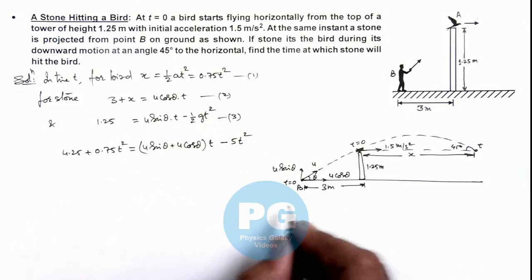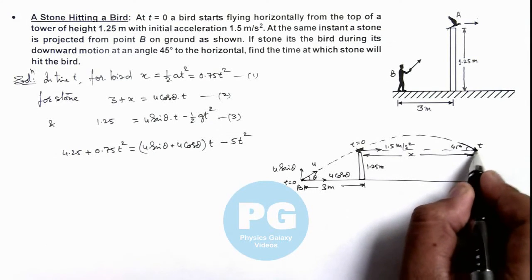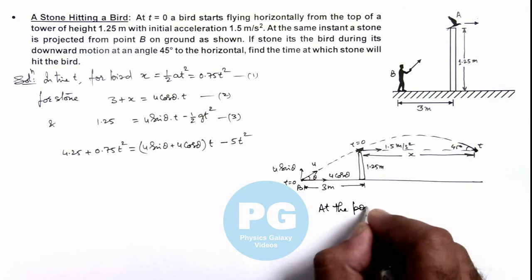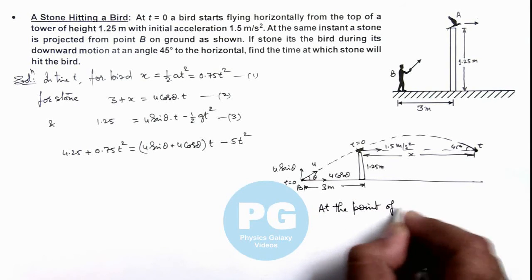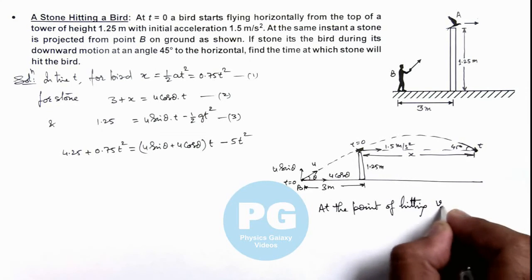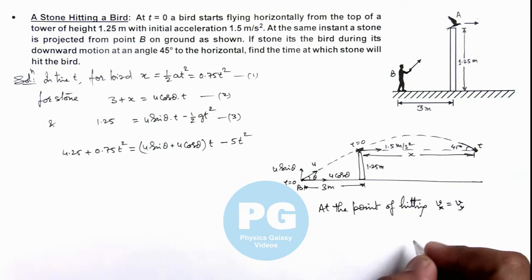We are also given that the stone hits the bird at an angle 45 degrees. That means, at the point of hitting, we can write velocity of stone in x direction equals velocity of stone in y direction.